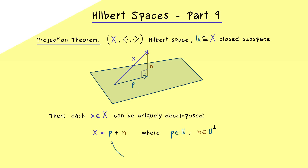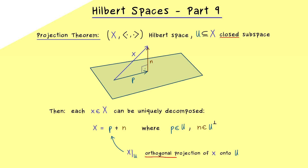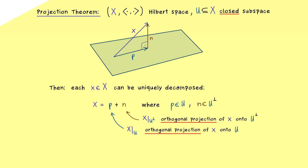It's important to remember that p and n are orthogonal to each other. p is called the orthogonal projection of x onto the subspace u, and we can also write x restricted to u instead of p. We can only do this because the orthogonal projection is uniquely given. Similarly, we write x restricted to u-perp for the vector n, which is the orthogonal projection of x onto u-perp. This is the well-known projection theorem, and the generalization here is that the claim also holds for infinite dimensional vector spaces if they are Hilbert spaces.